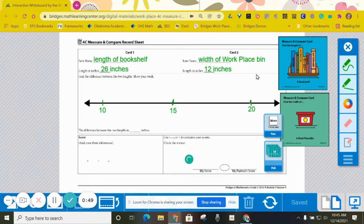And then I go ahead and measure those things using my measuring tape. I'm going to measure in inches. And so here, the measurement of my bookshelf was 26 inches. And when I measured the workplace bin, it was 12 inches.